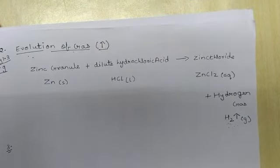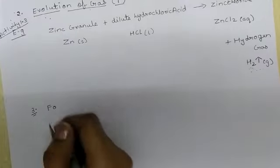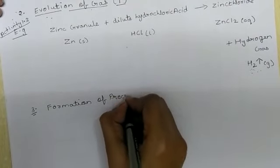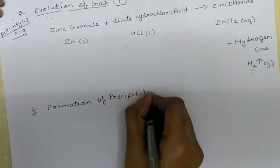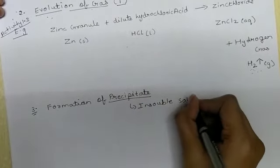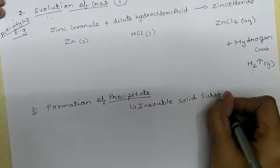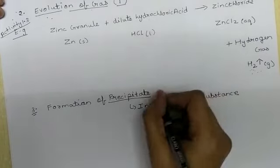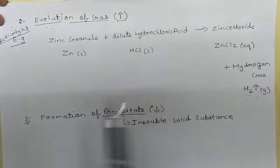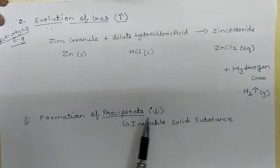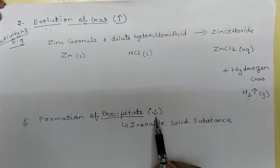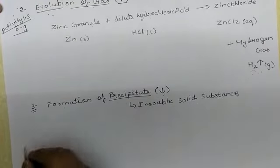The third characteristic is formation of precipitate. What do we mean by precipitate? It is an insoluble solid substance. Formation of precipitate in a chemical reaction is shown by a downward arrow — because precipitate is insoluble, it does not dissolve and settles down. Let me explain with an example.